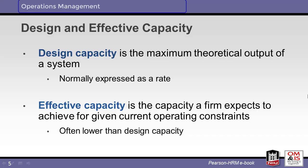Design capacity is the theoretical maximum output of a system. This level is seldom attained. Effective capacity is the expected output given the constraints of the system, and this tends to be the operational goal for the organization.